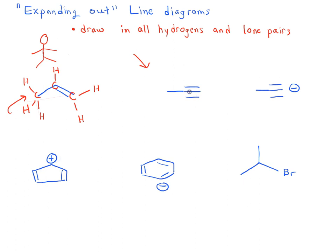Let's look at this next example — propyne, or 1-propyne. Let's start with the carbon on the left. It helps to draw in the carbons to see things more clearly. This carbon on the left has one bond drawn — the carbon-carbon bond. In order for it to follow the octet rule, since it's neutral and has no charges, it's going to need a total of eight electrons, which would come from three bonds to hydrogen. So we'd have three hidden hydrogens on that carbon.